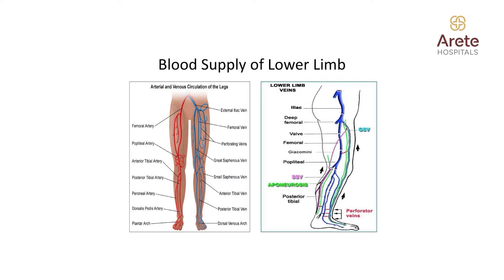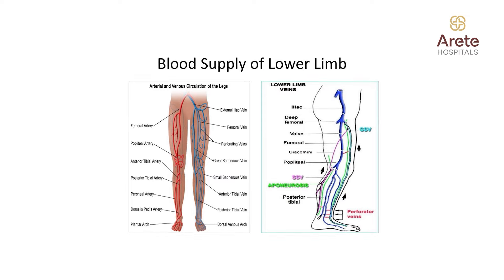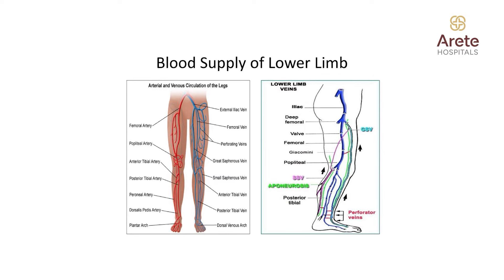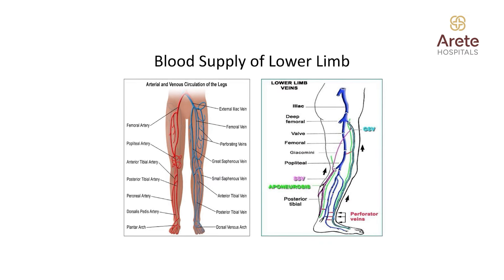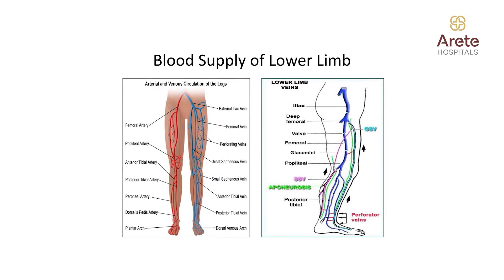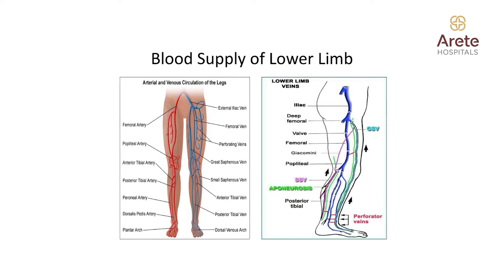Especially a male patient who is a chronic smoker — just by appearance of varicose veins, we should not do laser therapy. We need to check his arterial circulation also, by checking his pulses in the lower limbs and making sure that the patient is having good arterial circulation to the lower limbs. Then we can proceed with the treatment process.